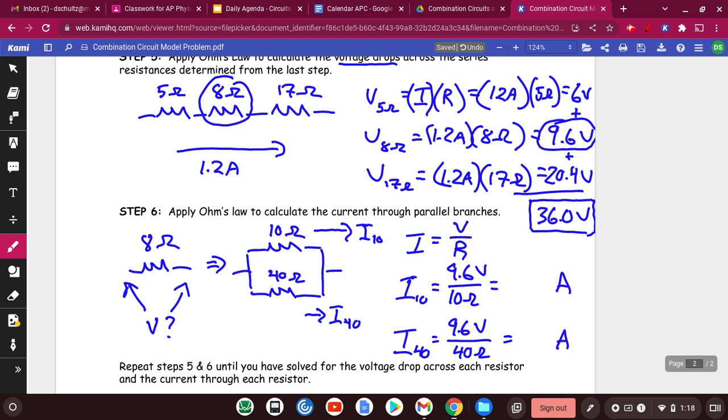So the first one is pretty easy here. I take 9.6 divided by 10. That would be 0.96 amps. Then the second one, I've got to divide 9.6 divided by 40. That's going to be 0.24 amps.